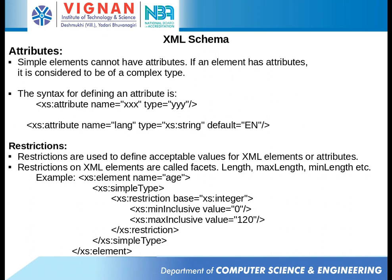When it comes to attributes, complex elements can have an attribute. To specify an attribute we use a tag called 'attribute', where we specify the name of the attribute followed by its type — the basic types acceptable by XML schema. We can also specify a default value, as you can see: 'language' is the attribute name, its type is string, and the default value is 'EN' for English.